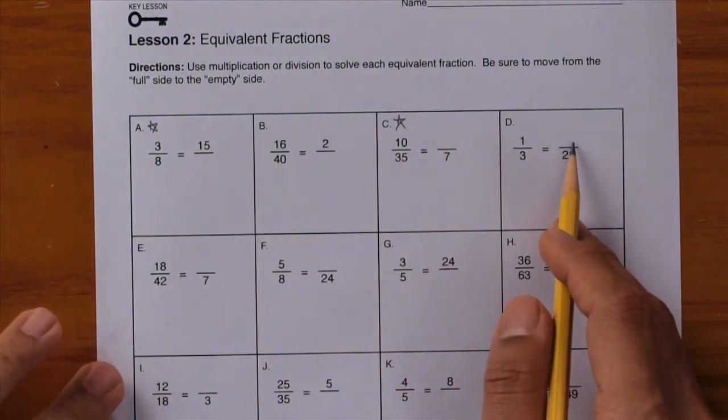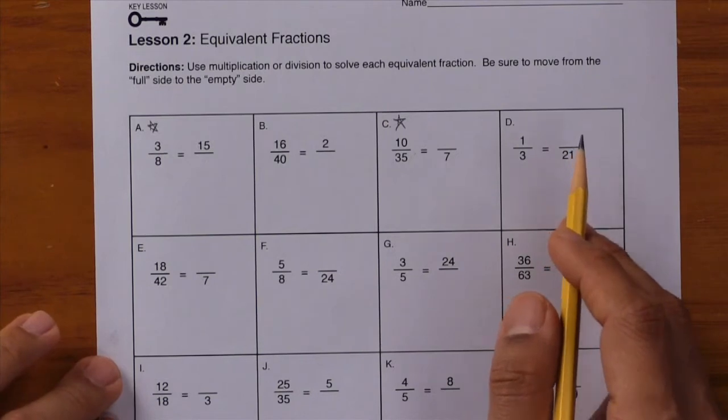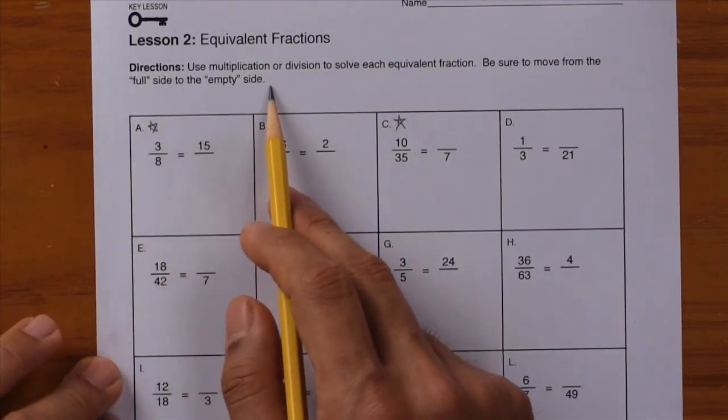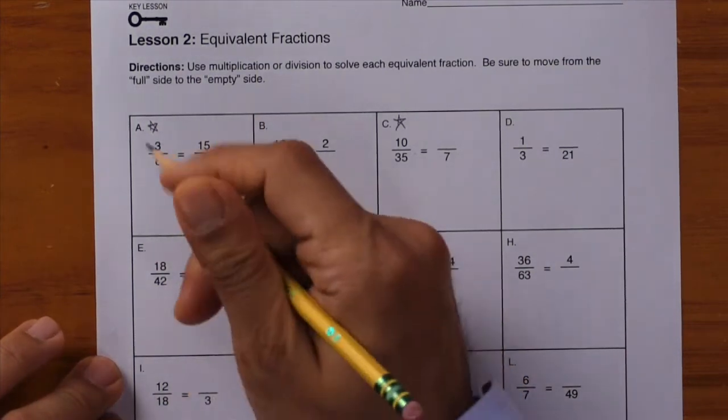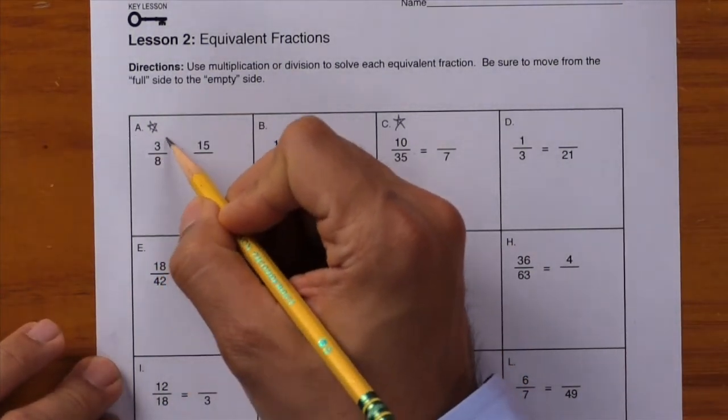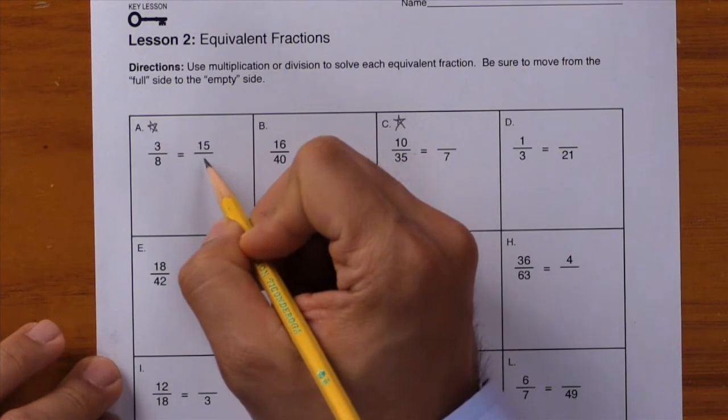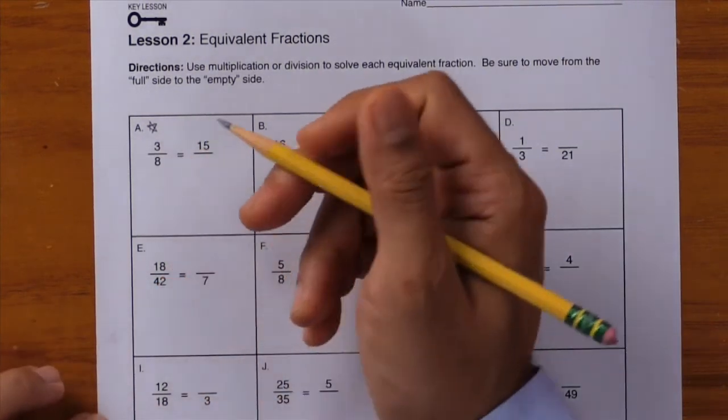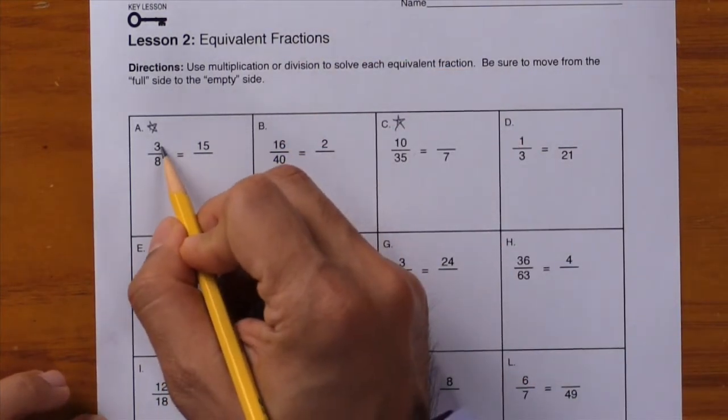Let's go ahead and go over three examples. Remember to go from the full side to the empty side. In box A, this is the full side and this is the empty side because one of the values is missing on this side. So using multiplication or division, how did you get from 3 to 15?